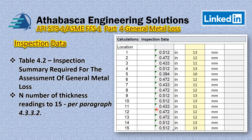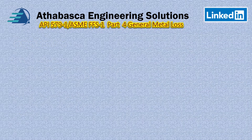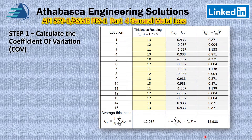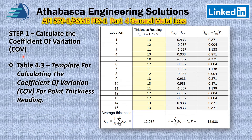One thing to bear in mind: because the method we're going to use today is highly statistical, API indicates that the number of thickness readings must be at least 15 — 30 is even better. The referencing paragraph for this is 4.3.3.2, and that applies in the 2017 version as well. The table we're using for this calculation is Table 4.3.3.4 of API 579.